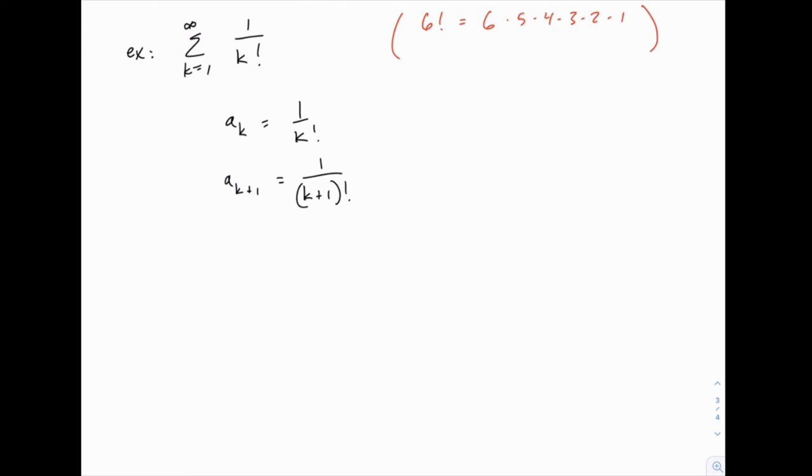But then all we need to do is divide these two. So we have a_{k+1} divided by a_k, and we're going to see how this simplifies. 1 over (k+1) factorial divided by 1 over k factorial.